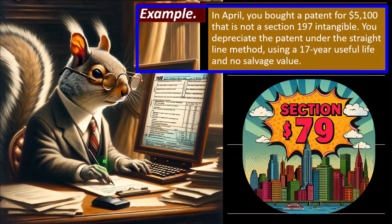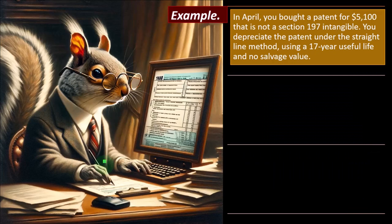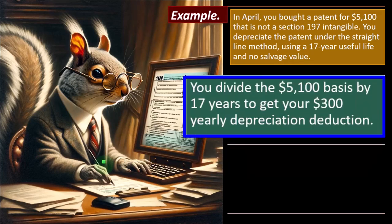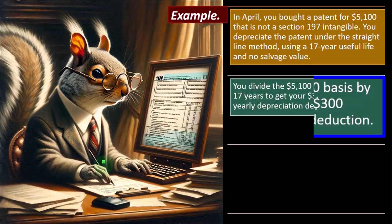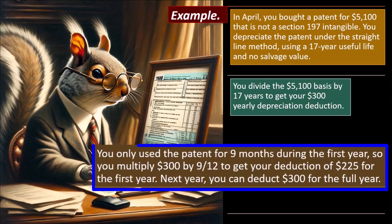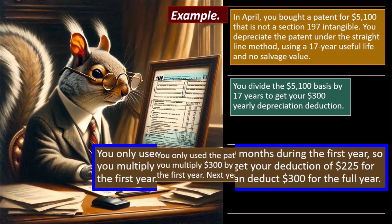Example: In April, you bought a patent for $5,100 that is not a Section 179 intangible. You depreciate the patent under the straight-line method using a 17-year useful life and no salvage value, because the patent will be worthless after it runs out. You divide the $5,100 basis by 17 years to get a $300 yearly depreciation deduction. You only used the patent for nine months during the first year, so you multiply $300 by 9/12 to get a deduction of $225 for the first year. Next year you can deduct $300 for the full year.